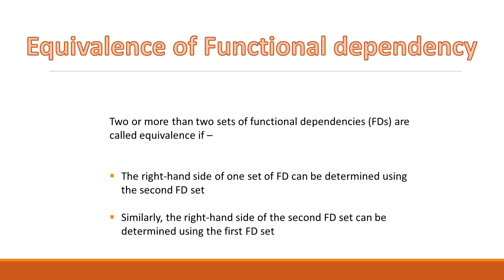Next, we will learn the equivalence of functional dependencies. Two or more sets of functional dependencies are called equivalent if the right-hand side of one set of FDs can be determined using the second FD set, and similarly, the right-hand side of the second FD set can be determined using the first FD set.